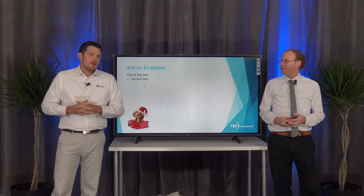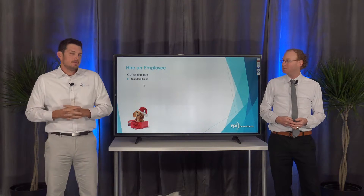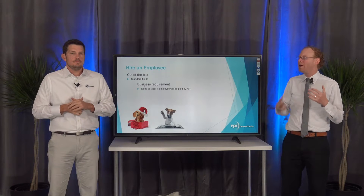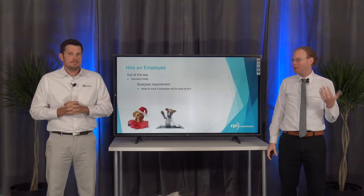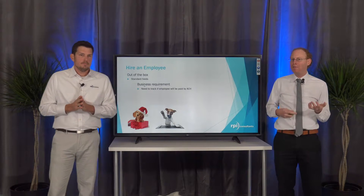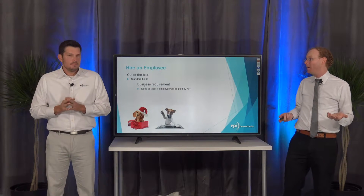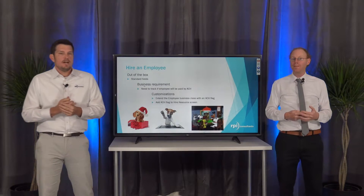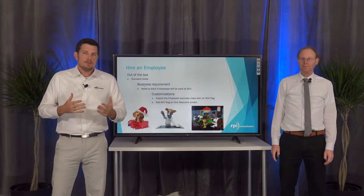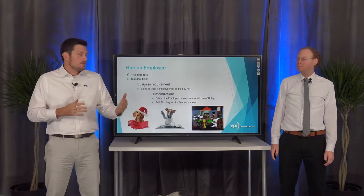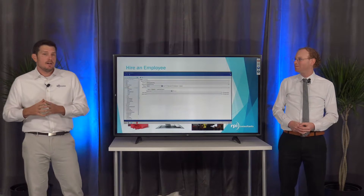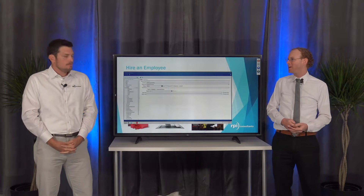Out of the box, a Hire Resource comes with a certain set of fields that we can update for each employee. As part of our employee tracking, we'd like to know if an employee has decided to receive their paycheck via ACH, and I want to capture that information right during the new hire process. So we're going to add a user field to extend the employee business class — we're going to call it ACH flag — to track which employees get paid with ACH and which get paid with checks. Once we've got that user field created, we've actually got to add it to the Hire Resource screen, and all that's done in Configuration Console.